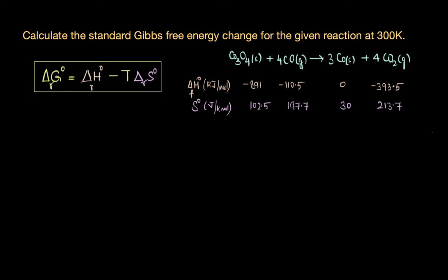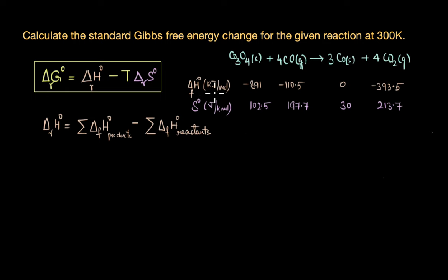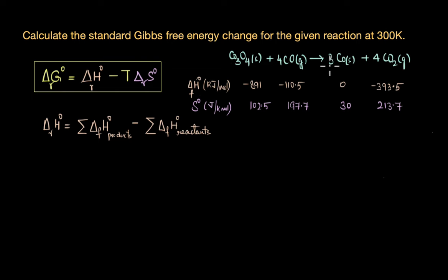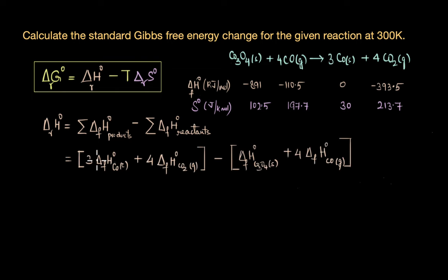The standard enthalpy change for this reaction is the sum of the standard enthalpies of formation of products minus the sum of the standard enthalpies of formation of reactants. When we plug in these values, we also need to take into account the stoichiometric coefficients of the products and reactants.